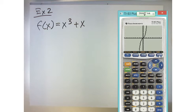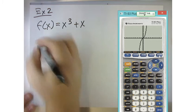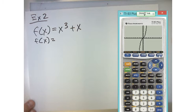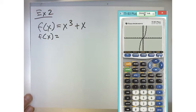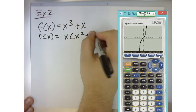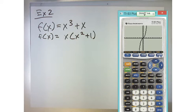Is there another way I could represent this function? We could pull an x out, right? We could say x times x squared plus one. Does that help us at all in any way? What other things can we determine by this?